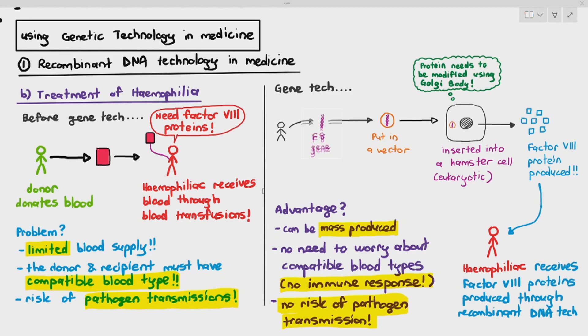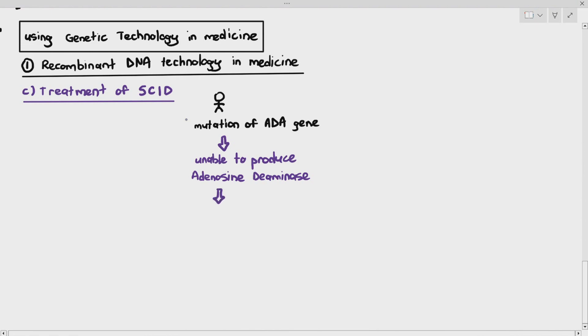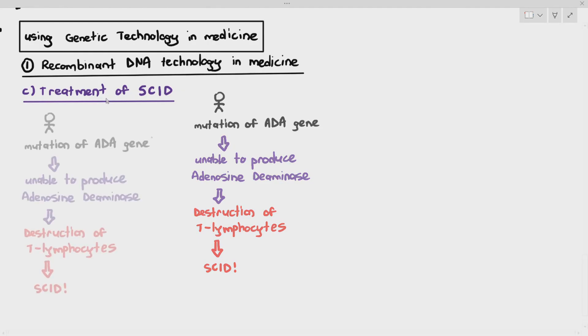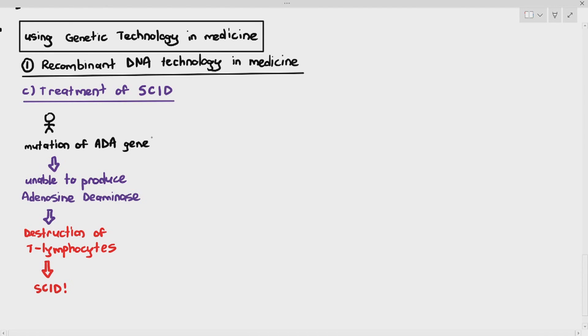The final treatment using recombinant DNA technology is the treatment of severe combined immune deficiency in infants usually. SCID, you can just call it SCID in the exam. Now people with SCID will have a mutation of the ADA gene. Because they have a mutation of the ADA gene, they are unable to produce a particular enzyme known as adenosine deaminase. And because we are not able to produce that important enzyme, it causes destruction of T lymphocytes in the person, which leads to severe combined immune deficiency problems. And these kind of people, their immune system is so weak, they might have to live perpetually in those bubbles. I'm sure you've seen those pictures of kids living in bubbles where they have to be isolated from the world because any pathogen that goes into the body may kill them easily.